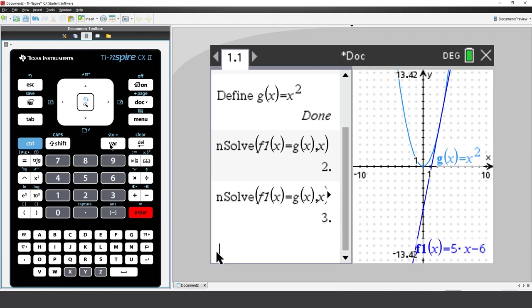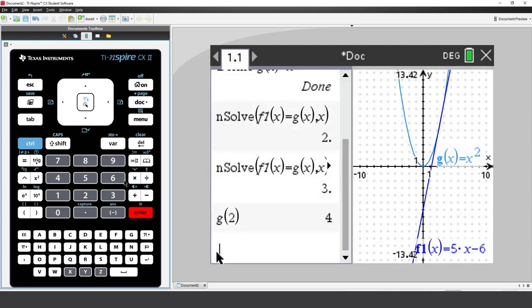I've used function notation for this, so if I want to determine the corresponding y values, I can just evaluate g of 2 and g of 3. And they give me the corresponding y values.